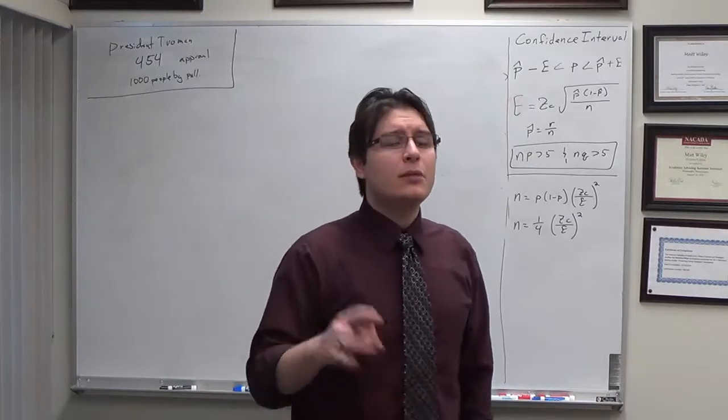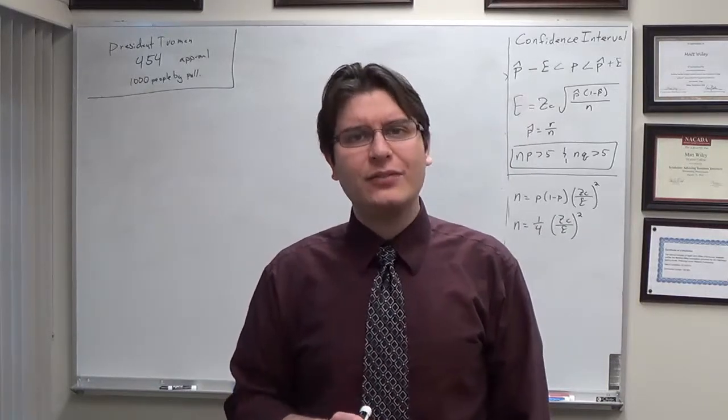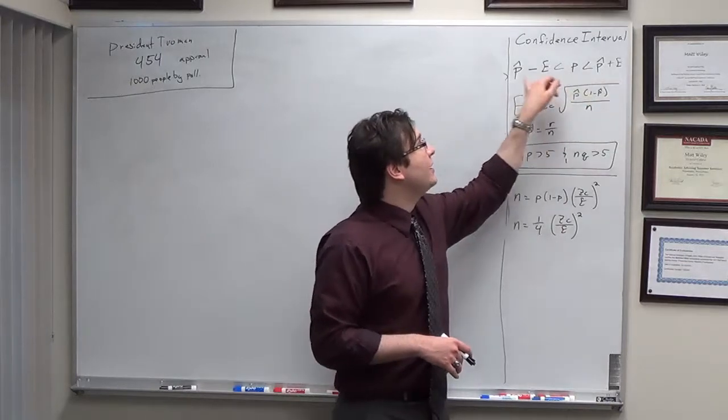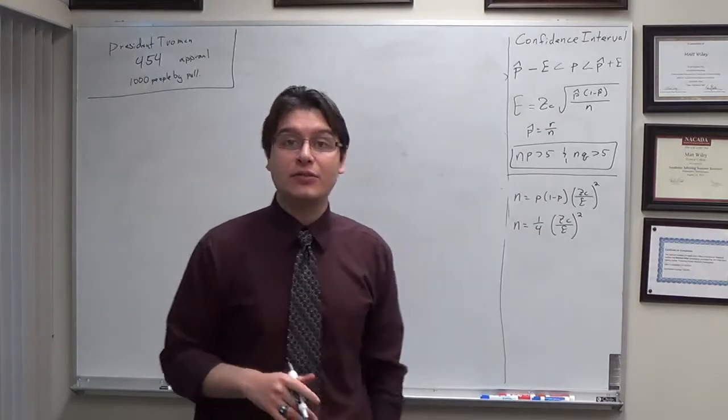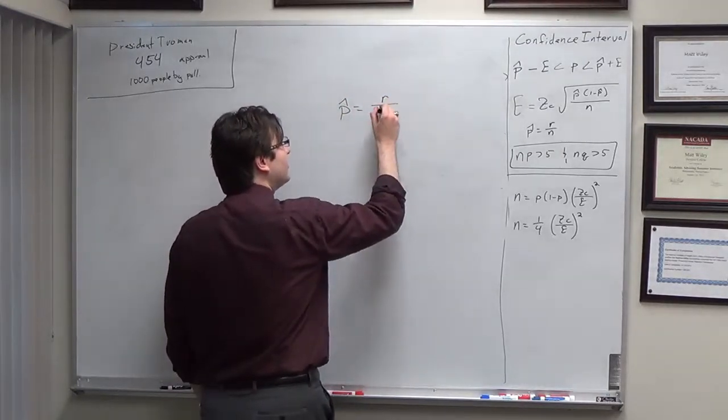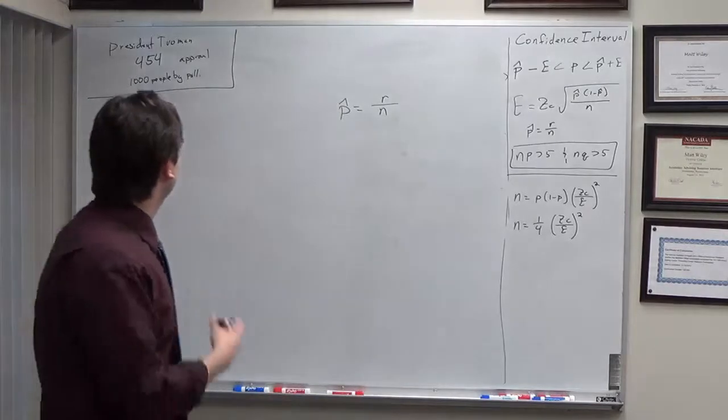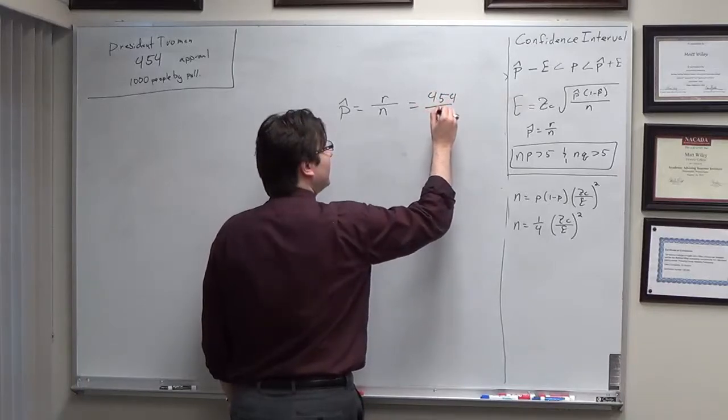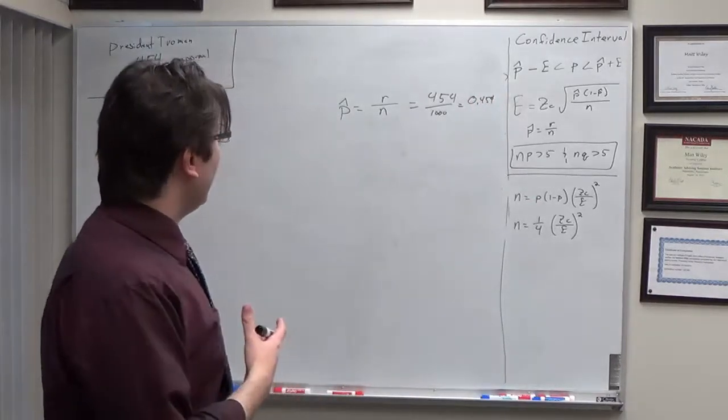We're in the business of using our point estimates, p-hat, to calculate what the population approval rating for p is. Let's talk about p-hat. p-hat is like the x-bar of proportions. It's r, the number of successes, divided by n, the total number of attempts. We asked a thousand people, 454 of them said we approve. So p-hat equals 454 divided by 1000 equals 0.454. This is p-hat, a sample proportion.